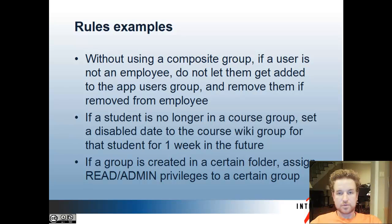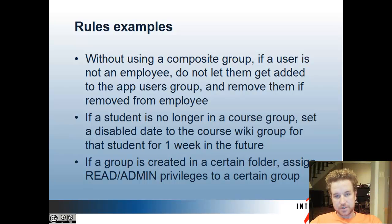Some examples of rules are a new kind of composite group. If a user is not an employee, do not let them get added to the app users group, and remove them from the app users group if they are removed from employee. The difference from a normal composite is that with a normal composite, if they ever get added to employee again they'd be back in the app users group. But with this rule, if they're hired somewhere else and added to employee again, they'd have to go through the same intake process to be part of the app users group again. Also, performance is a bit better since computing composite memberships can be difficult.